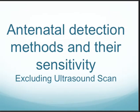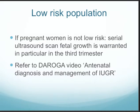What methods do we have to detect the growth of the baby antenatally, and what is their sensitivity? We exclude ultrasound scan because we are limiting ourselves to a low-risk population. If pregnant women are not low risk for IUGR, we revert to serial ultrasound fetal growth scans, particularly in the third trimester, as the vast majority of growth restrictions resulting in fetal death in utero take place then.